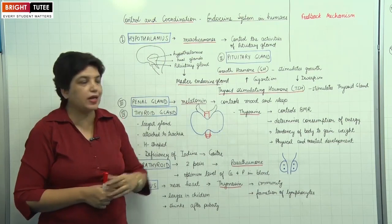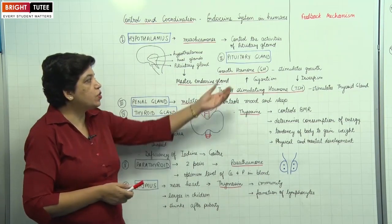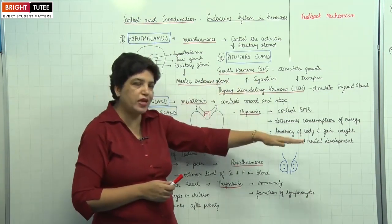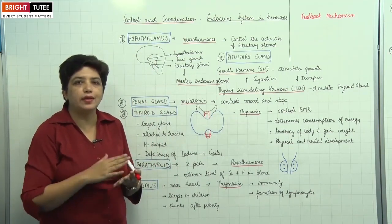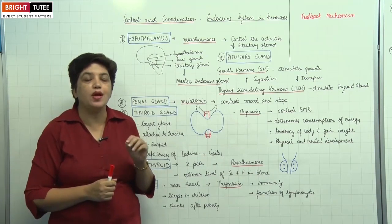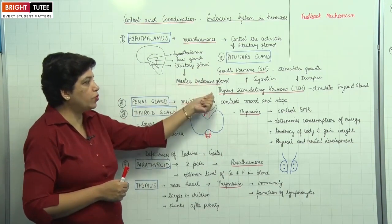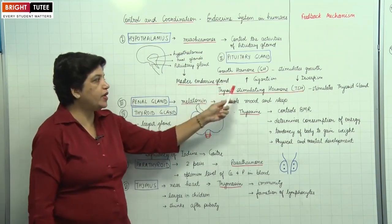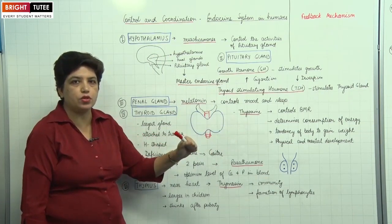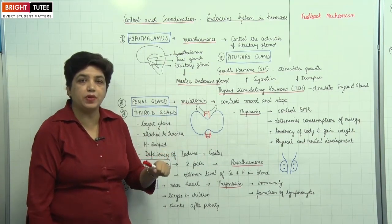One important hormone released by the pituitary gland is the growth hormone (GH), which stimulates growth in growing bodies. If released in excess, it leads to gigantism; if released in insufficient quantity, it leads to dwarfism. So hormones are required in a very small but precise quantity — a slight increase or decrease can lead to harmful effects. Another important hormone released by the pituitary gland is TSH, or thyroid stimulating hormone, which stimulates the thyroid gland to produce and secrete its hormones as per the body's requirement.